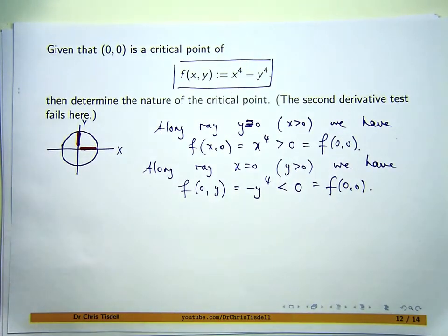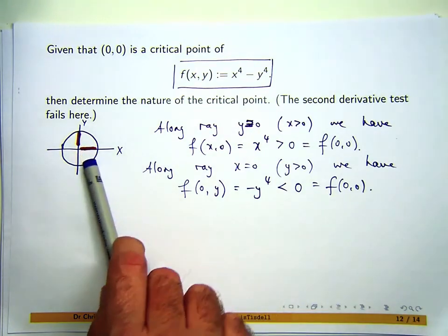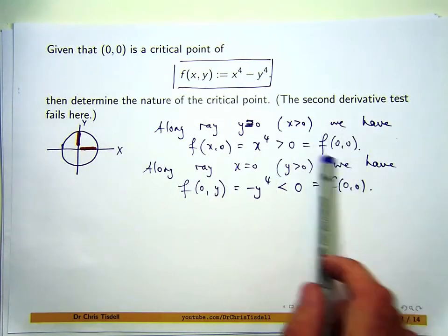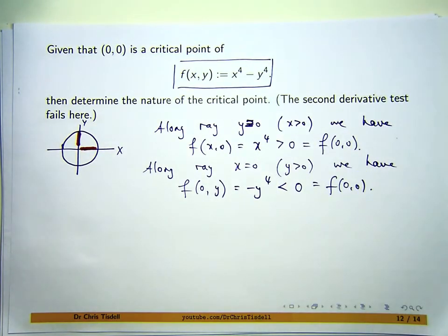So, no matter how small that disk is, I can shrink it as much as I like. I can always find a point where the function's positive and negative. So there's always a point in that disk where the function is more than zero and less than zero. So that means that the origin must be not a local min, not a local max, but something in between, the so-called saddle point.